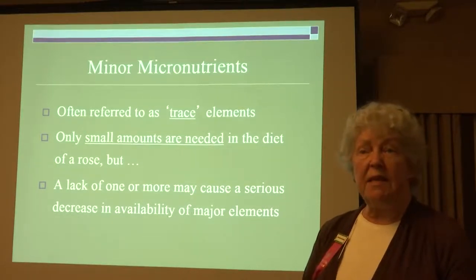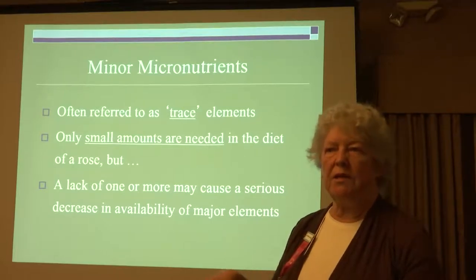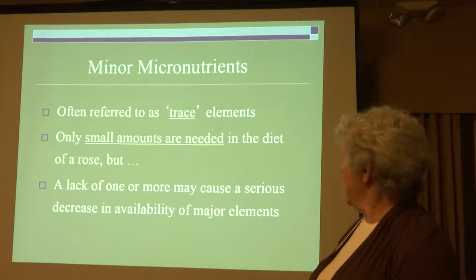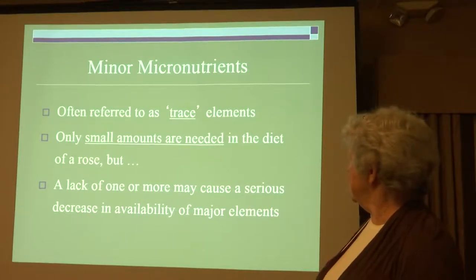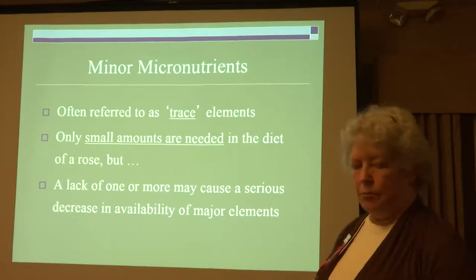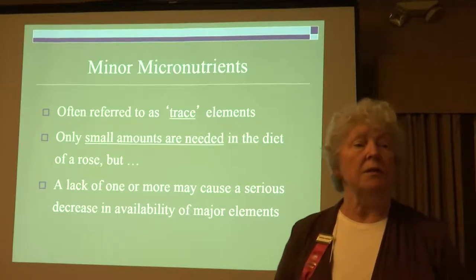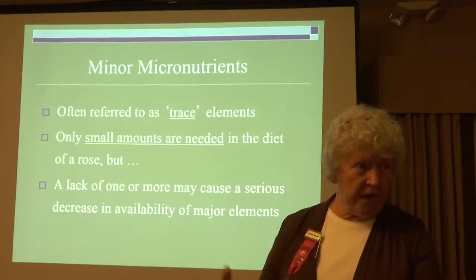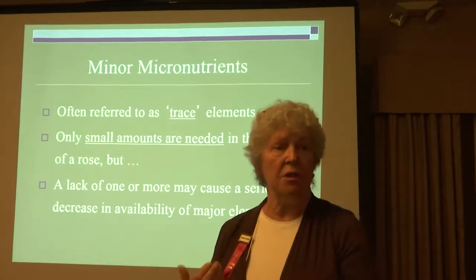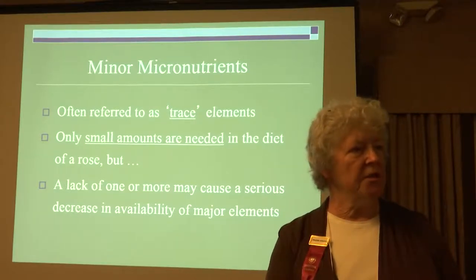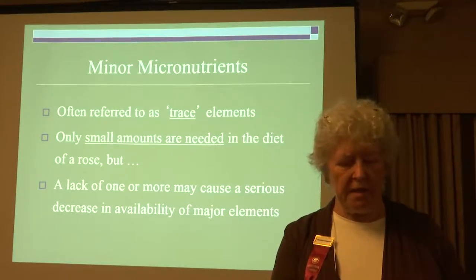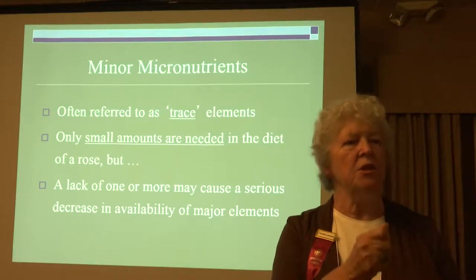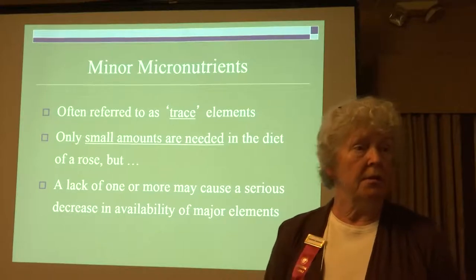Micronutrients are often called trace elements — the bag will just say 'trace,' meaning very, very small amounts are needed. You could get a decrease in production of roses if you're counting blooms. In the cut rose industry, plants are in hydroponic tanks and they literally count how many blooms each plant produces — if she's not producing, she's replaced.